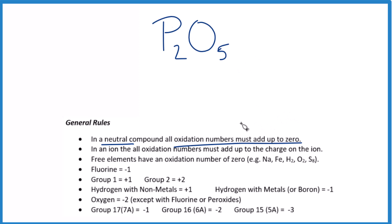When we look at something like this, phosphorus we're not sure about, but oxygen is almost always negative 2, except when it's with fluorine or in peroxides. So each one of these oxygens has a negative 2 oxidation number.